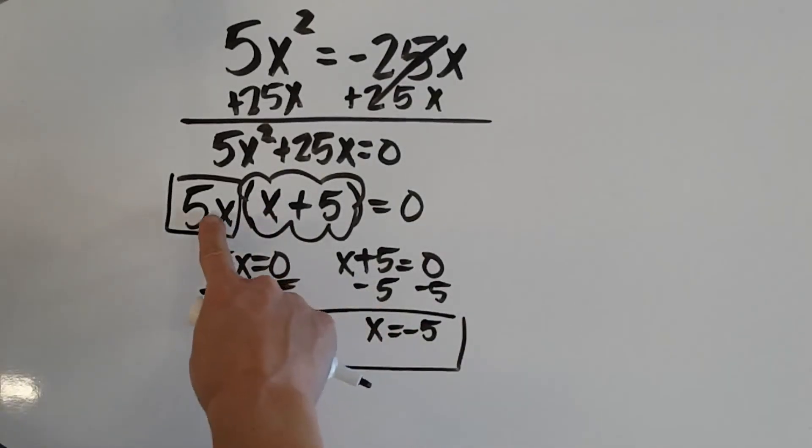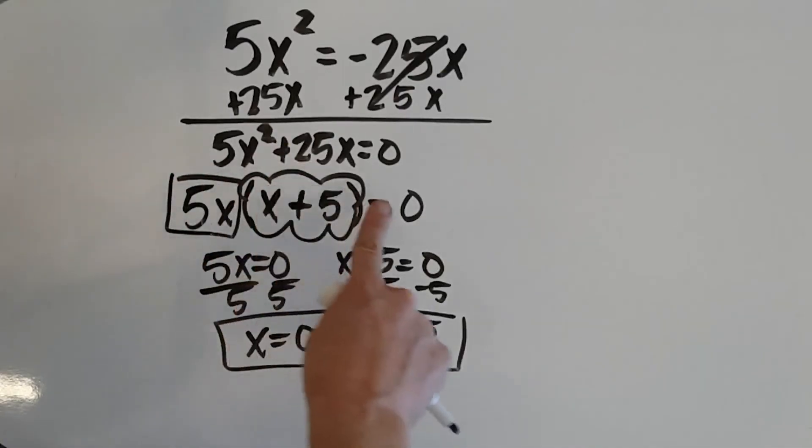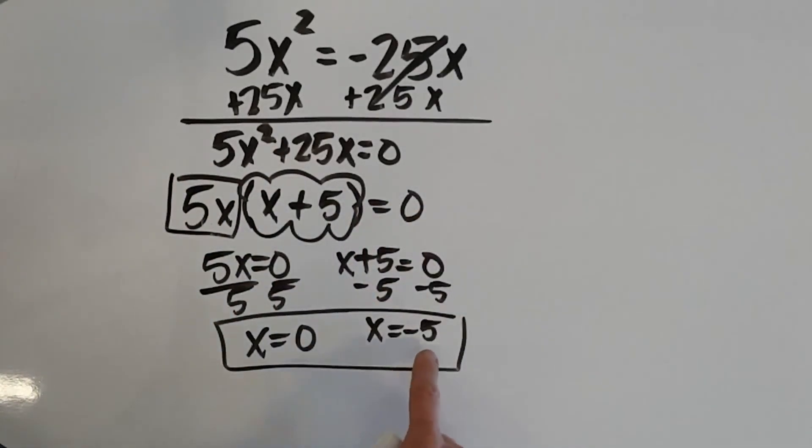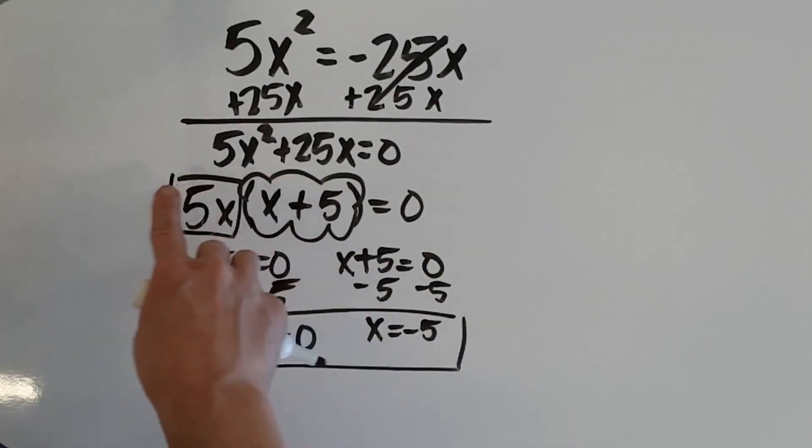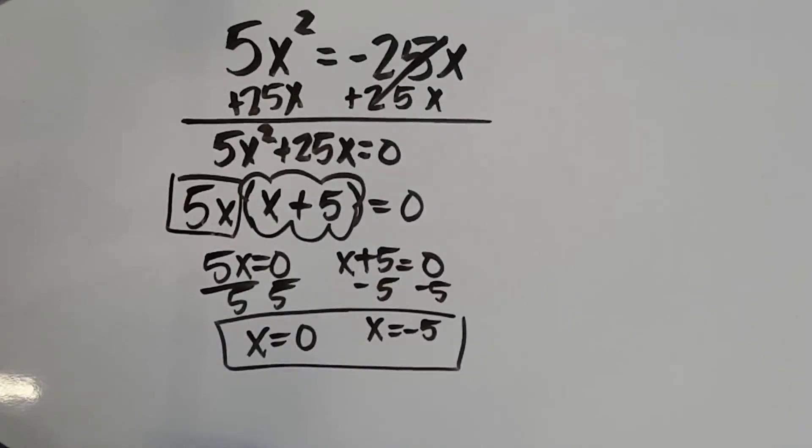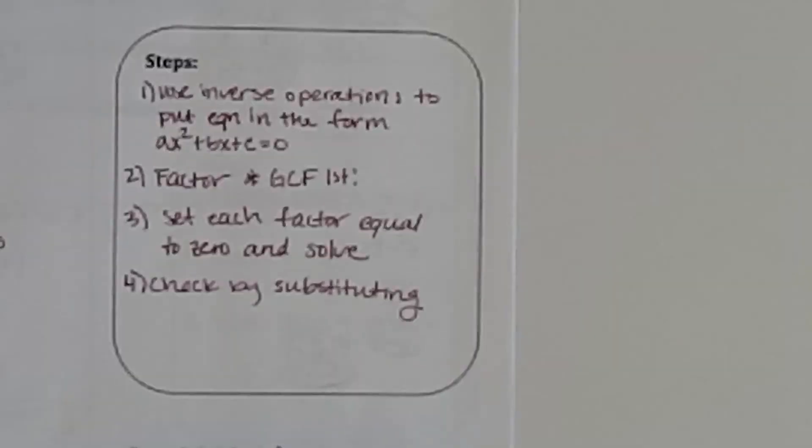Which makes sense because if x is 0, I put a 0 in for x, this box becomes 0, and 0 times anything is going to give me 0. If I make x negative 5, well, then my bubble becomes 0, and 0 times anything is still going to give me 0. So, those are the three examples. I'm going to write out the steps on the next page, or on the next screen, so that you can copy them down if you need to. Here are those steps.